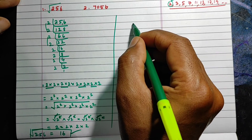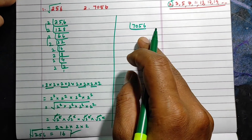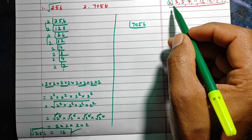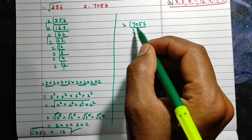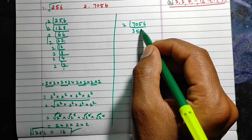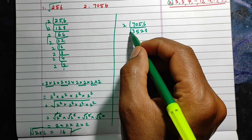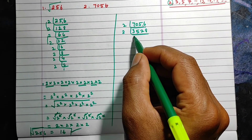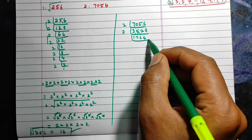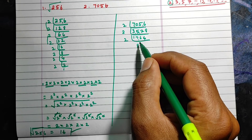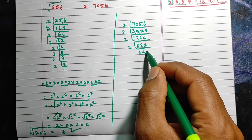Now let's see a 4-digit number: we have 7056. 7056 is also an even number, so let's start with the even prime number 2. Dividing repeatedly: 7056 ÷ 2 = 3528, 3528 ÷ 2 = 1764, 1764 ÷ 2 = 882, 882 ÷ 2 = 441.